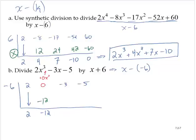Negative 12 times negative 6 is 72. And adding negative 3 plus 72 is 69.